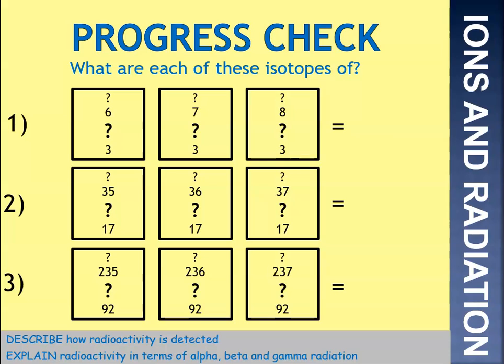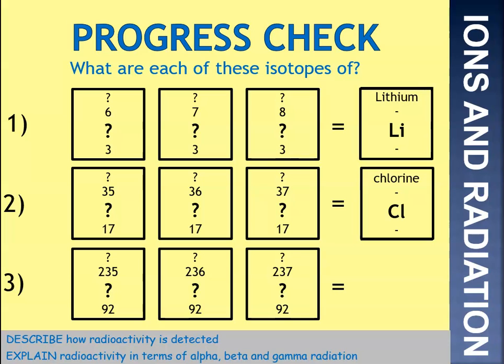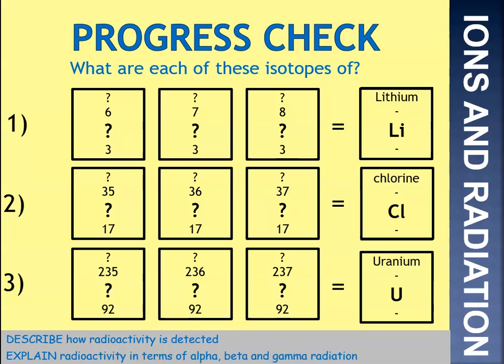Next, isotopes. An isotope is an atom that contains a different number of neutrons but the same number of protons. It is the proton number that tells you what the element is. Number one: each of those atoms has three protons and different numbers of neutrons — that's lithium. Second: all got 17 protons — that's chlorine; they're isotopes because they have different numbers of neutrons. Finally, the bottom one: all those atoms contain 92 protons — that's uranium. They're three different isotopes of uranium because they have three different masses and different numbers of neutrons.